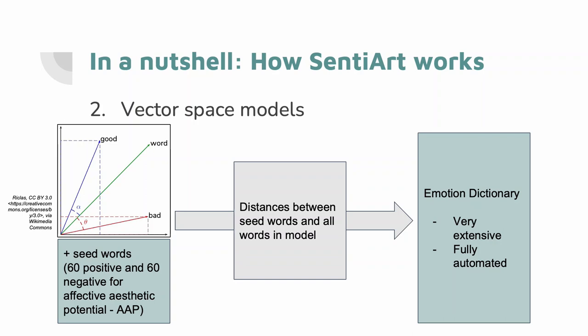SentiArt distinguishes itself from other dictionary-based approaches because it uses vector space models to create its dictionary. Vector space models are a computational technique to transform words into vectors by using their co-occurrences in large amounts of text. SentiArt uses lists of seed words — for example, 60 positive and 60 negative — which model the affective aesthetic potential of words, also called AAP. It then calculates distances between each word in the model and the seed words. Those distances become the dictionary scores, offering two main advantages: being generated in a fully automated way and adaptable to different models or seed word lists, and also covering almost the entirety of the lexicon.